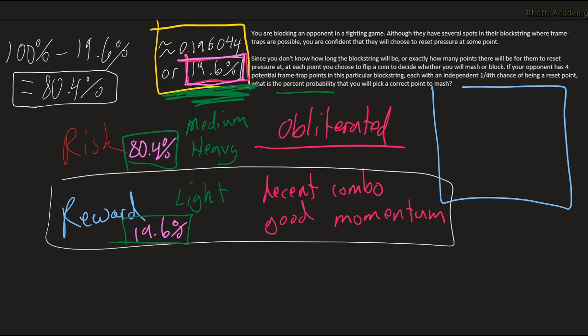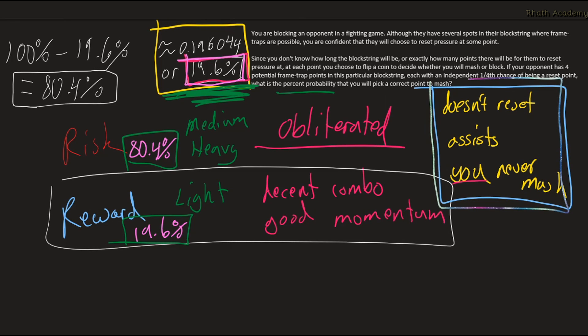But there's still variables that we aren't including here. Like if our opponent doesn't reset at any point, whether or not they have assists available, or whether or not you choose to never mash. So there's certainly a lot more to think about.